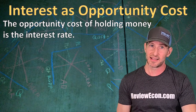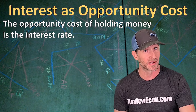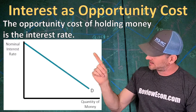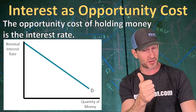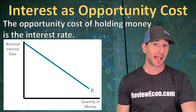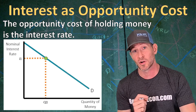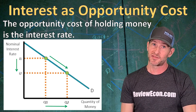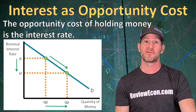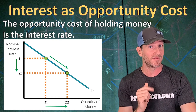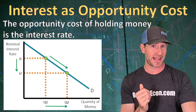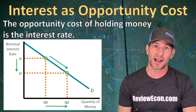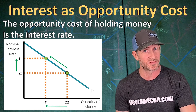In macroeconomics, we say that the opportunity cost of holding money is the equilibrium interest rate. When you learn about the money market graph, you will learn that the demand for money is downward sloping, which indicates the inverse relationship between the interest rate and the quantity of money that people demand. At higher equilibrium interest rates, people demand lower quantities of money because those high interest rates encourage people to purchase interest-bearing assets like bonds. And when interest rates fall, we see an increase in the quantity of money demanded because at lower interest rates, people have a liquidity preference — they prefer the ability to buy goods and services. When the interest rate rises, people demand less money and purchase more interest-bearing assets.